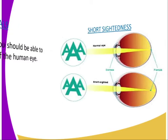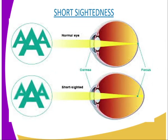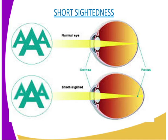Now we are going to start with the first one, which is known as short-sightedness. Our diagrammatic presentation here is showing a normal human eye and another eye which is short-sighted. Short-sightedness is, in other terms, referred to as myopia.